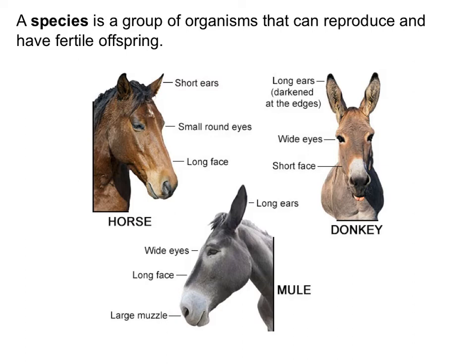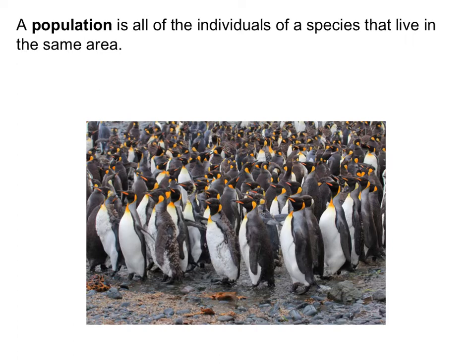Another term you need to be familiar with is species — a group of organisms that can reproduce and have fertile offspring. There might be organisms that look really similar but if they cannot reproduce and their offspring are not fertile, they are not part of the same species. For example, a horse and a donkey can reproduce, but their offspring, a mule, would be sterile, meaning it cannot have its own offspring.